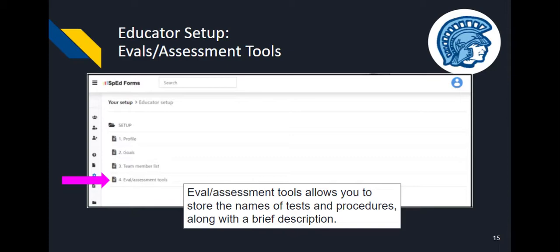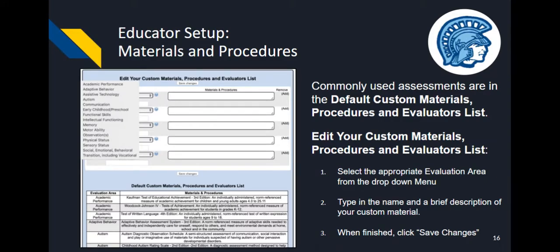Similar to the team member list, you can quickly enter test names and descriptions into your IEP forms using section 4, the evals and assessment tools databank. Once you open this section, you'll find the most universal and frequently used items in the default custom materials, procedures, and evaluators list. Above, you can customize your own materials by filling in the text boxes. Pause the recording to review default materials and add any materials to your personal list if they are not included in the default list.